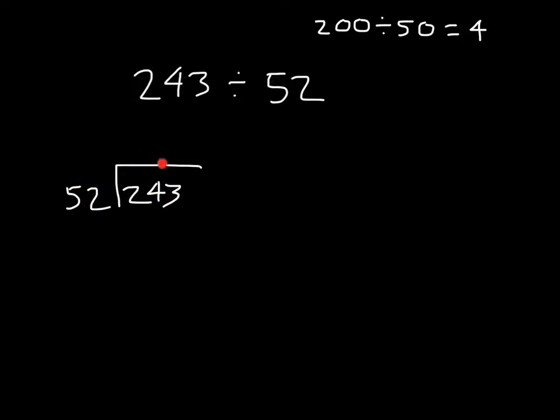But it can divide the 243 ones. It goes in with our estimate, we have 4 there, 4 whole times. Let's try that. 4 times 2 is 8. 4 times 5 is 20.